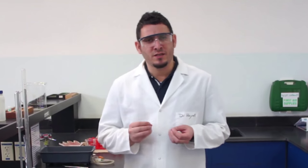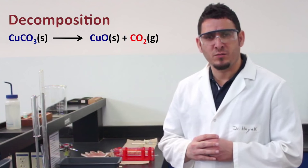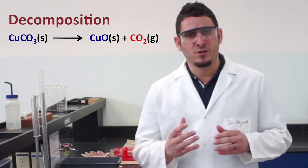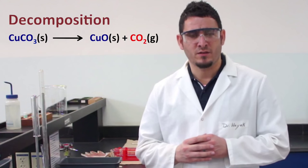Hi, this experiment is titled 'The Stoichiometry of a Chemical Reaction.' In this experiment we will be studying the stoichiometry of a chemical reaction using experimental data that we will collect. The reaction we have chosen is the decomposition reaction of copper(II) carbonate, which will dissociate to give copper(II) oxide plus carbon dioxide.